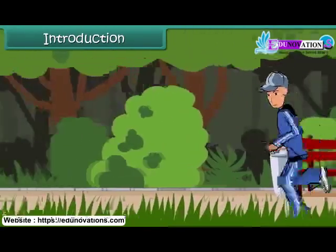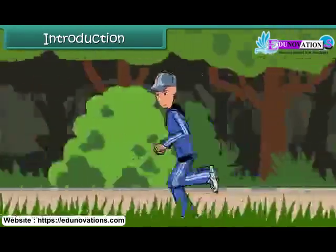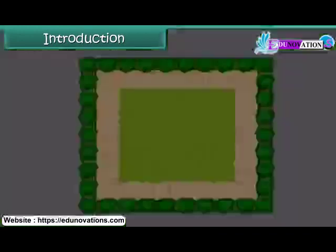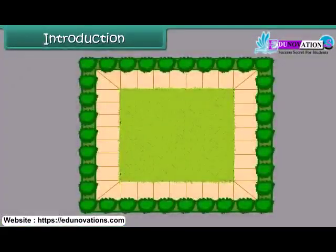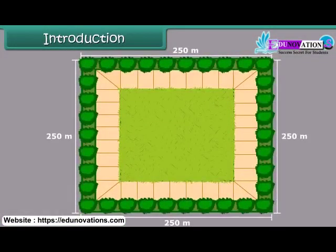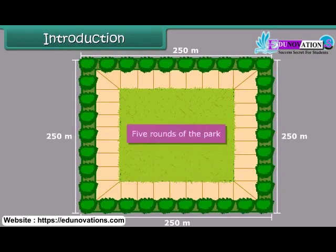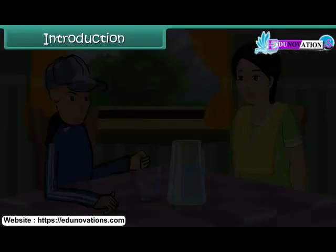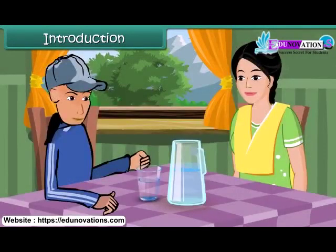You go jogging in a park. The park is a square. Each side of the park is 250 meters long. You take five rounds of the park and return home.